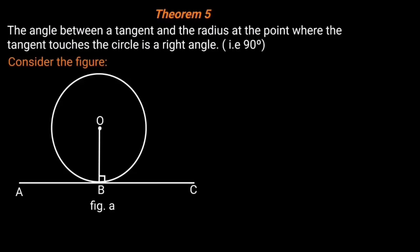In this video we are going to look at Circle Geometry Theorem 5. The angle between a tangent and the radius at the point where the tangent touches the circle is a right angle, that is 90 degrees.